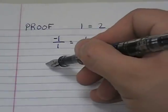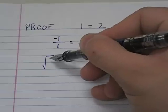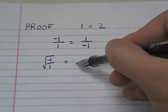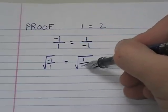And we're going to take the square root of both sides. So if I take the square root of both sides, I get √(-1/1) = √(1/-1).